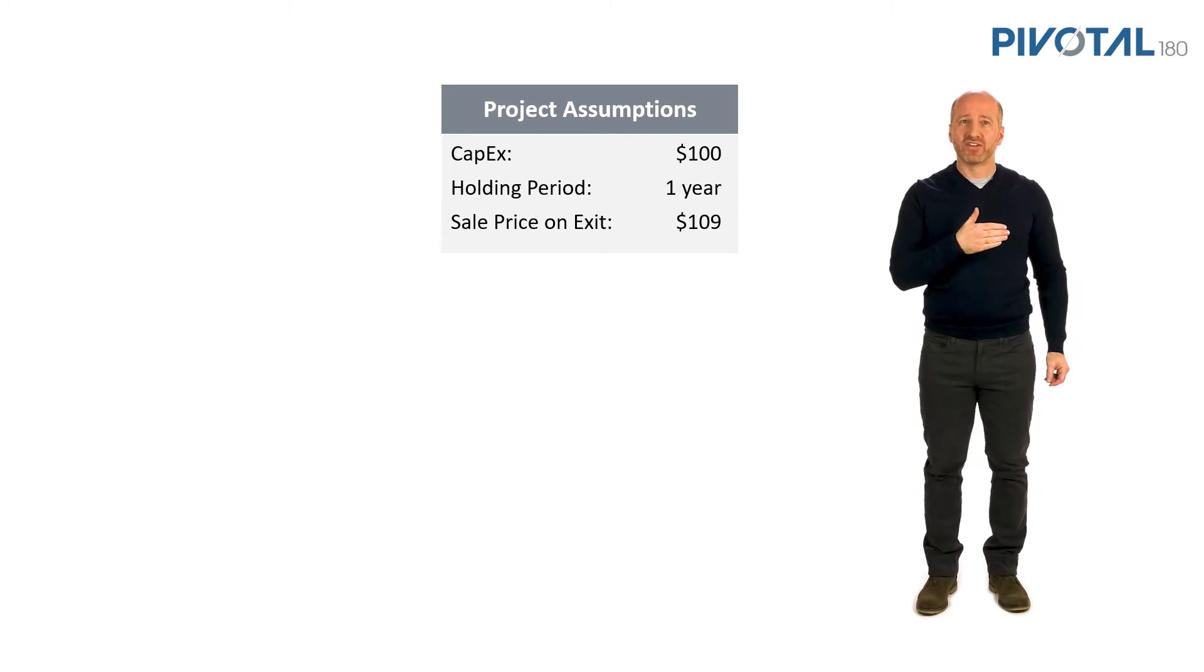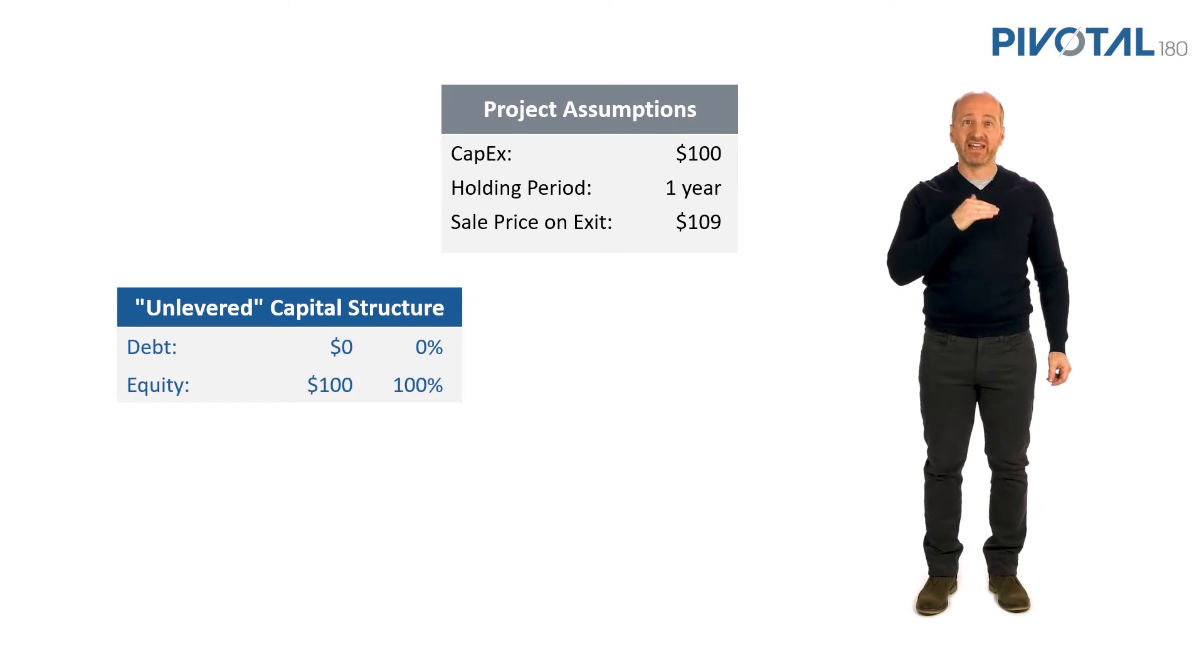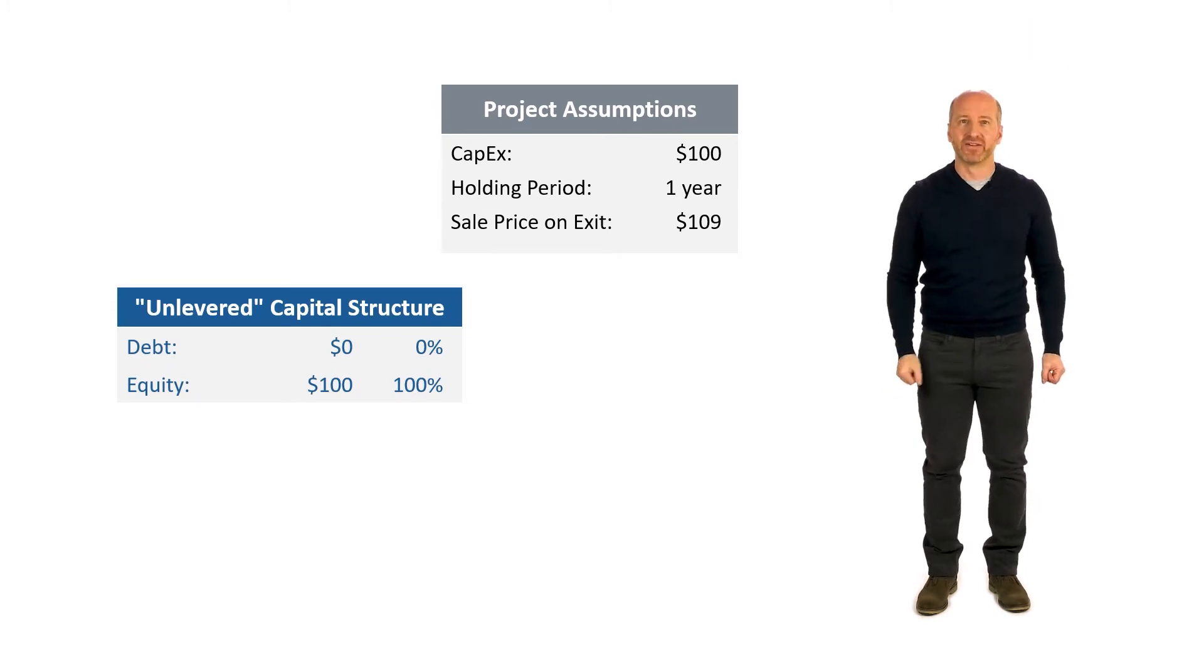Let's say that project has been funded with an unlevered capital structure. It's been funded with no debt, so zero debt and $100 in equity. On exit one year from now, when we sell that project, we receive a profit of $9.